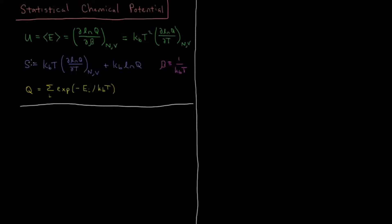In later videos we saw that the entropy in the statistical mechanical sense is equal to kB times T times the partial derivative of natural log of Q with respect to T at constant N and V, plus another term: kB times the log of the partition function. The partition function Q is the sum over all possible states i of the Boltzmann factor, which is e to the minus energy of that state divided by kT.